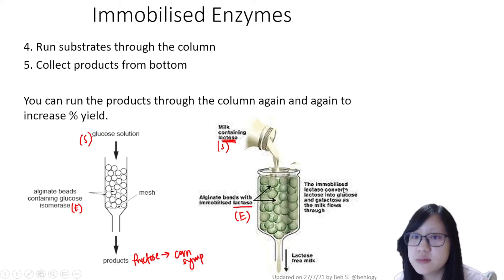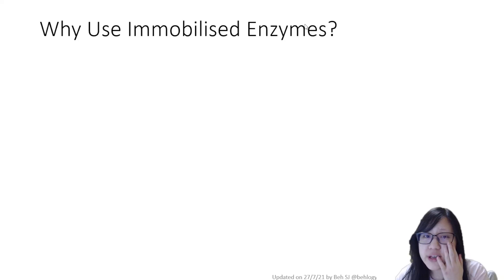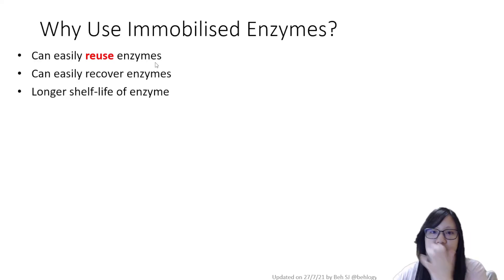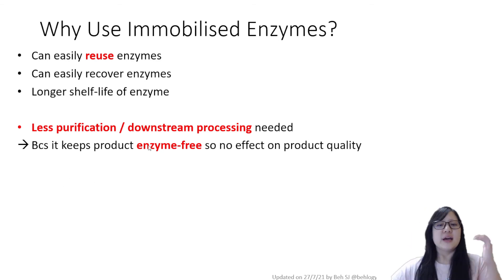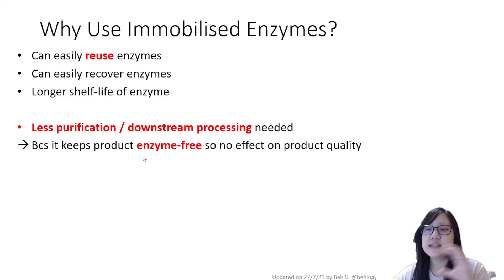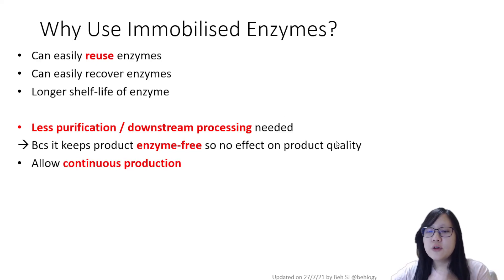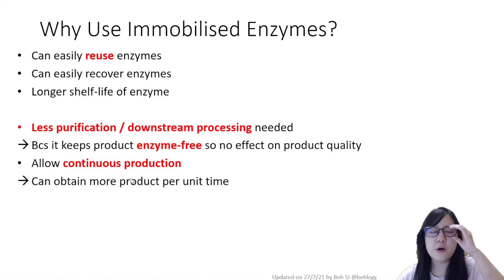So why use immobilized enzymes? Why do industries prefer them? First, the enzymes can be easily reused because they are separate from the product and easy to recover. The enzymes also have a longer shelf life. Additionally, less downstream purification is needed because the product comes out enzyme-free — the enzyme and product are separate, so product quality and taste are unaffected. This also enables continuous production using the same column, resulting in more product per unit time.